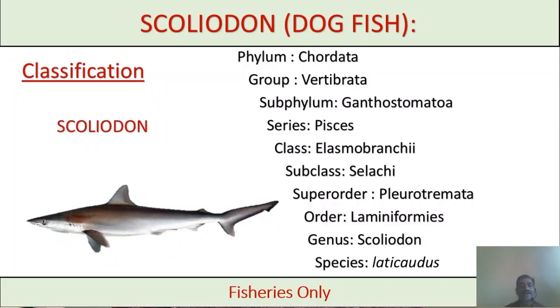Thus, we discussed the classification of Scolidon: phylum Chordata, group Vertebrata, subphylum Gnathostomata, series Pisces, class Elasmobranchii, subclass Selachii, suborder Pleurotremata, order Lamniformes, genus Scolidon, and species laticaudus.